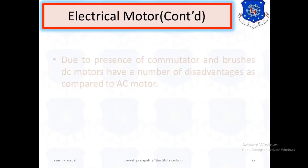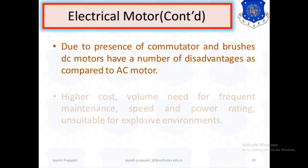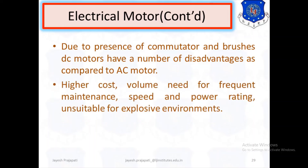Due to the presence of commutators and brushes, DC motors have a number of disadvantages compared to AC motors, including higher cost, larger volume, need for frequent maintenance, limited speed-power rating, and being unsuitable for explosive environments.